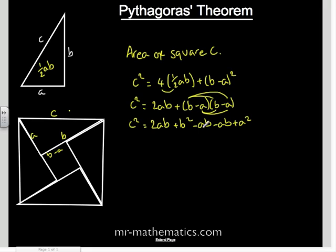C squared equals 2AB plus B squared, collecting terms together, minus 2AB plus A squared.